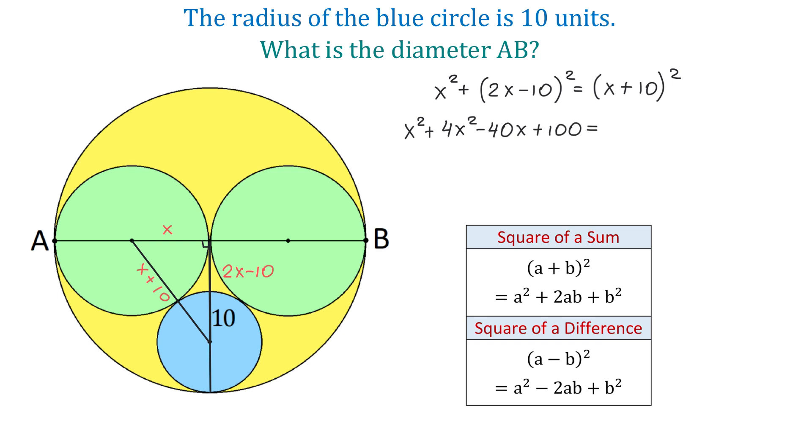Now, on the right side, we will use the formula for the square of a sum. The formula is A plus B squared equals A squared plus 2AB plus B squared. Then, according to this formula, on the right side, we will have X squared plus 20X plus 100.